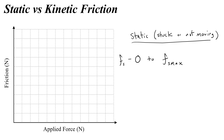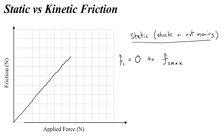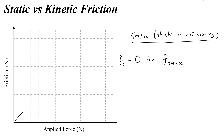We can write it this way: Fs, or static friction, is equal to anything between zero and Fs max. When you are applying force during this static phase, the applied force and the friction force are equal to each other, so you would see a line on the graph that goes up incrementally — they're equal to each other until you reach Fs max, the maximum static force of friction.